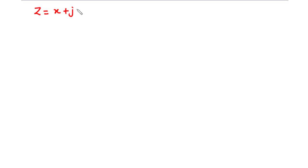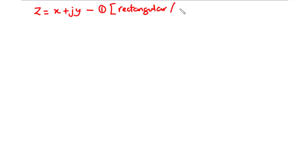In this video we are going to learn how to convert a complex number in the rectangular or Cartesian form into the polar form. Given a complex number z equals x plus jy — let's call this equation 1 — this is the rectangular or Cartesian representation of the complex number.